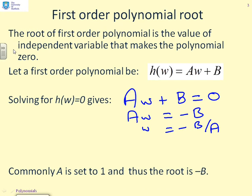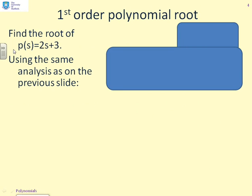Now, commonly A is set to 1, we'll get to that later, and in this case the root would just be minus B. Now a different example. Let's find the root of the polynomial p(s) equals 2s plus 3, and we're going to use the same analysis technique as on the previous slide.